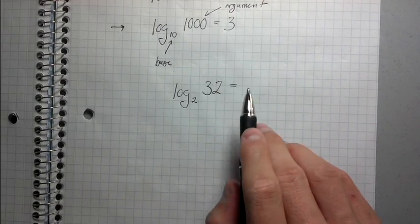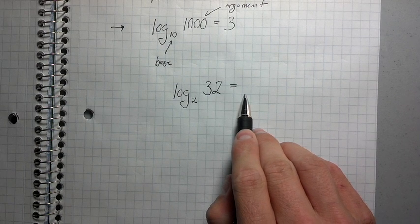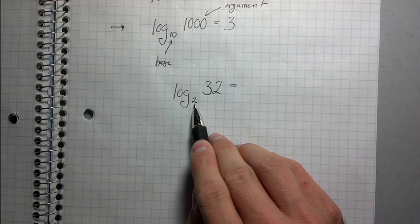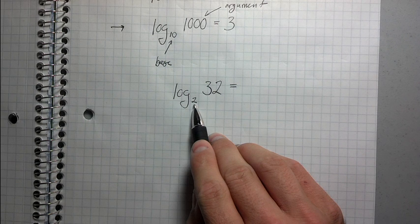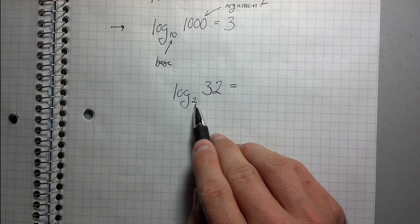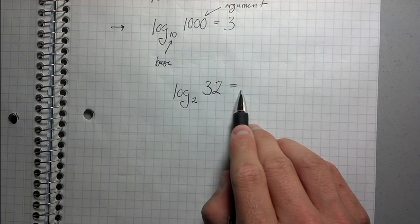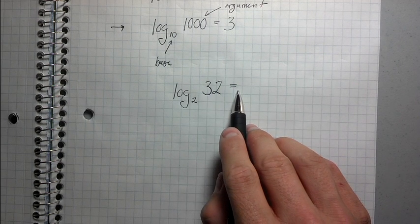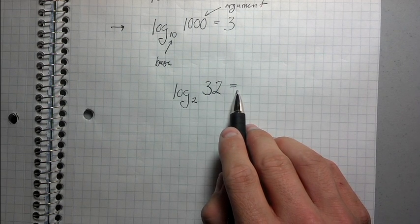To answer this question, we need to think about what number does 2 need to be raised to the power of in order to be 32, right? Well, 2 to the 1 is 2, 2 to the 2 is 4, 2 cubed is 8, 2 to the 4th is 16, 2 to the 5th is 32.